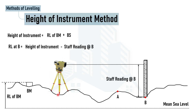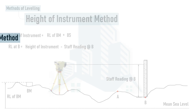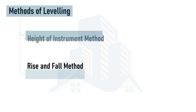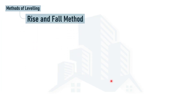The height of instrument remains the same for a single instrument setup. However, if the equipment is shifted from one position to another, the height of instrument changes. When solving examples of the height of instrument method, I will show how reduced level calculations are done when shifting the equipment from one position to another.